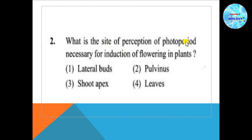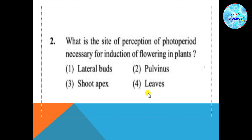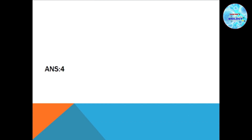We need to know how much light is received. The first stimulus is perceived by the leaf because the leaf is the site of chlorophyll. So the answer is option number 4 — leaves.